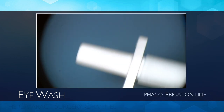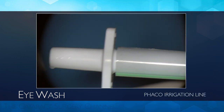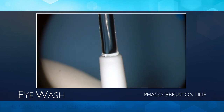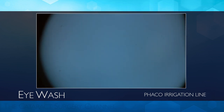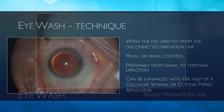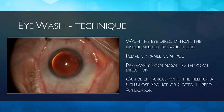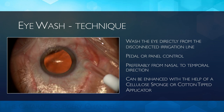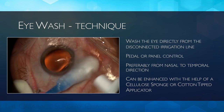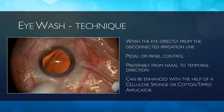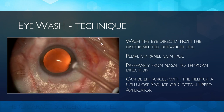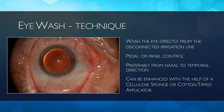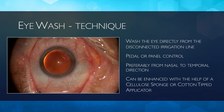Eye wash is a term I coined to refer to the act of washing the eye with the phaco irrigation line. Wash the eye using the disconnected irrigation line under pedal or panel control. Going from nasal to temporal direction makes it more effective, guiding the debris towards the bag. A cell sponge or Q-tip can be used to enhance the cleaning action.